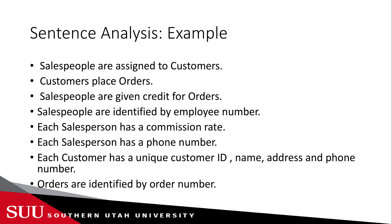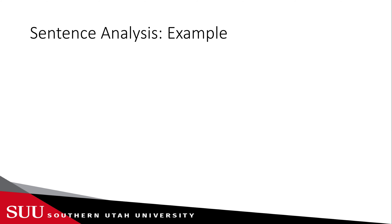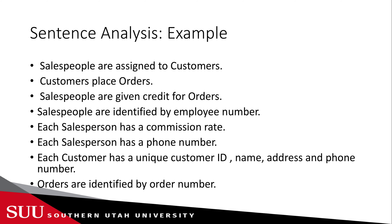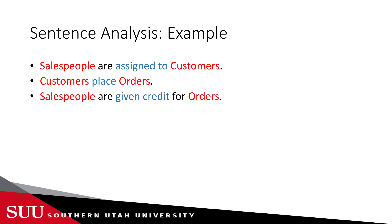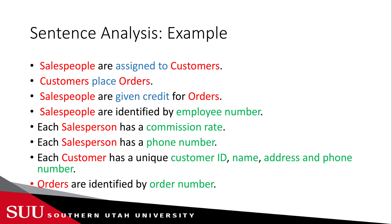In the third sentence, 'giving credit' is also a relationship. Single facts like 'salesperson has a commission rate' or 'salespeople are identified by employee number' — employee number and commission rate are single facts related to those entities, so these become our attributes.